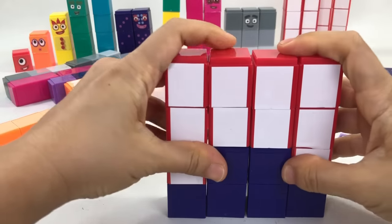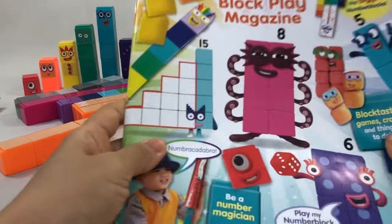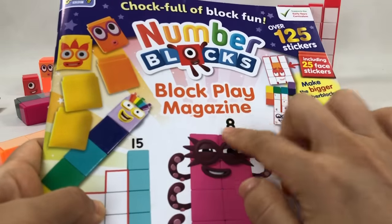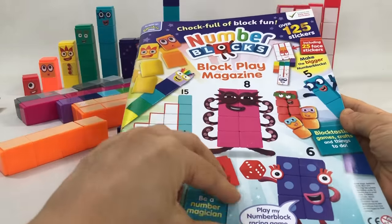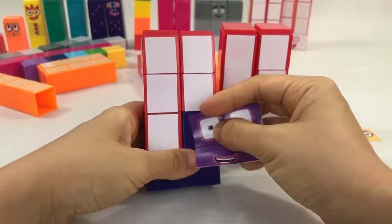With 1, 4, and 9. Now all we need is a face. And for that, we're going to use the block play magazine. Because inside, it comes with stickers, including number block 16's square-shaped face.